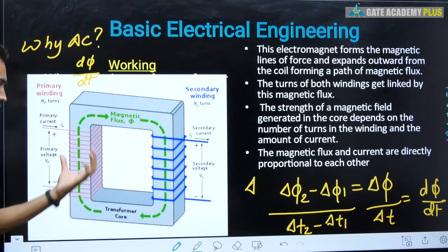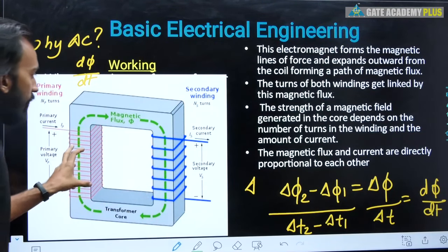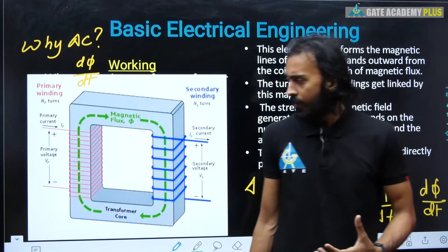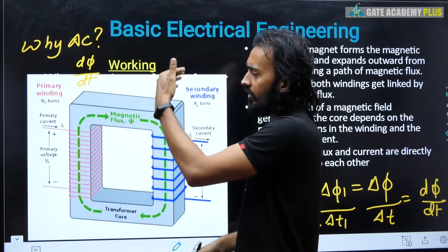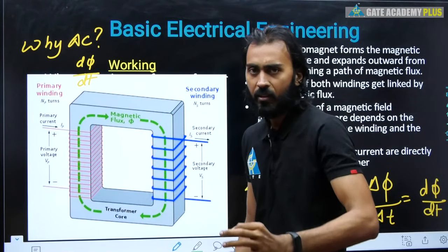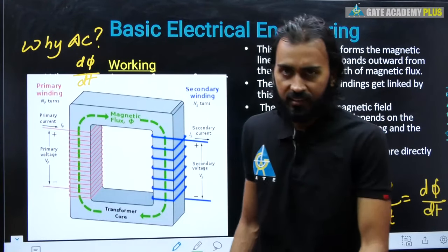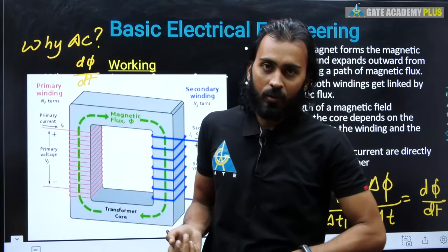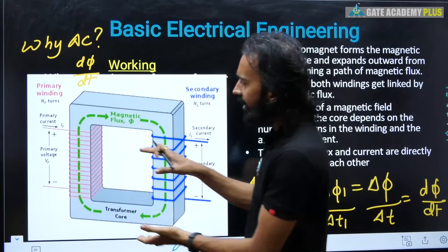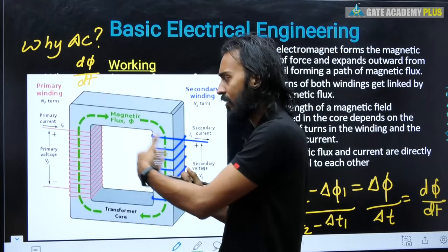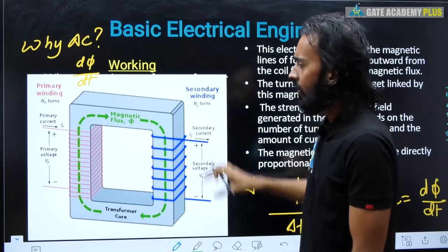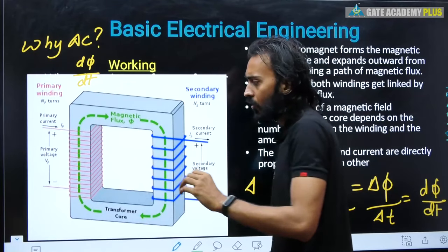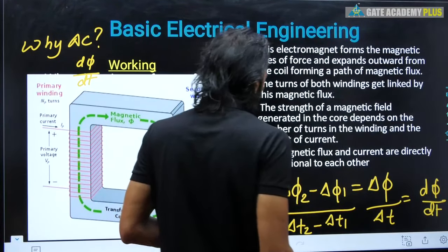We need a change in flux: Δφ = φ₂ - φ₁ with respect to a change in time Δt — that is dφ/dt, the rate of change of flux. Only when this rate of change exists does the magnetic flux get cut with the conductor and EMF can be induced. The MMF — magnetomotive force — then drives the flux from the higher magnetic field section towards the lower, through the low reluctance path, just as current flows from higher to lower potential in an electrical circuit.